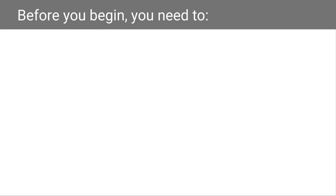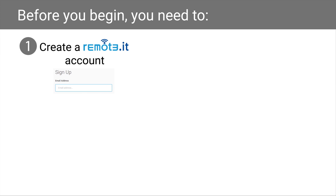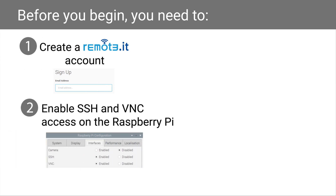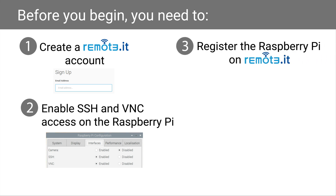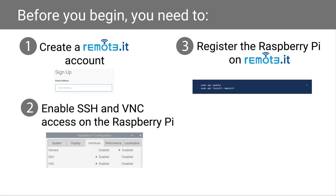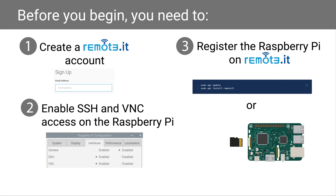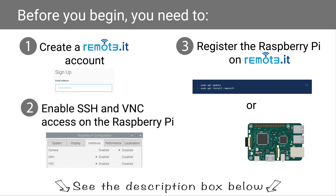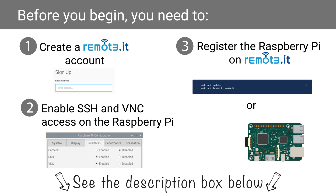Before you begin, you will need to create a Remotit account at the Remotit website, enable SSH and VNC access on your Raspberry Pi, and register the Raspberry Pi on Remotit. To do this, you can either install Remotit from the command line of the Raspberry Pi, or if you have not set up your Raspberry Pi yet, you can use the Remotit Pi SD card image. If you need help with any of this, please see the information linked in the description box below.